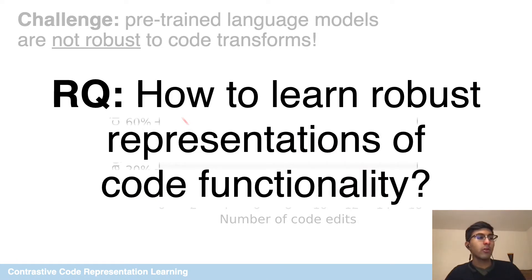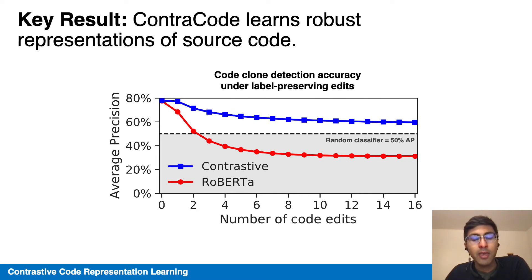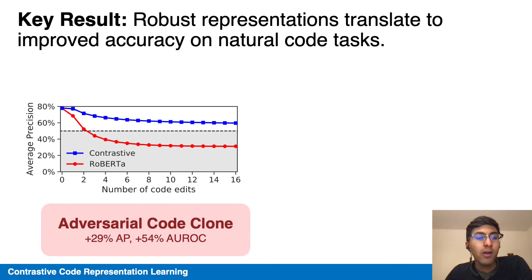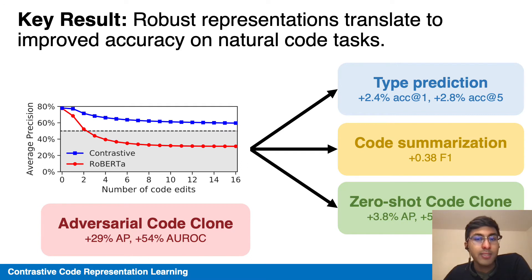Our research question is how to learn robust representations of code functionality. We'll present a contrastive learning approach, called ContraCode, that does significantly better in this adversarial setting. On three downstream natural tasks, we also outperform the baselines, indicating that learning representations of functionality is quite useful, even on natural or modified code.